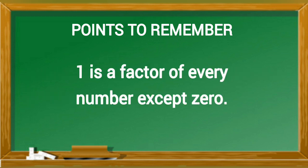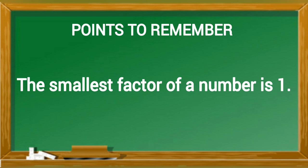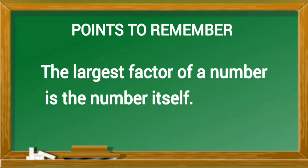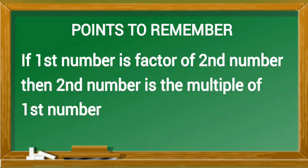1 is a factor of every number except 0. Every non-zero number is a factor of itself. The smallest factor of a number is 1. The largest factor of a number is the number itself. If first number is factor of second number then second number is the multiple of first number.